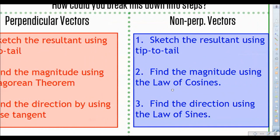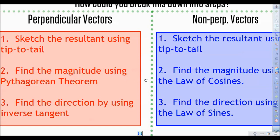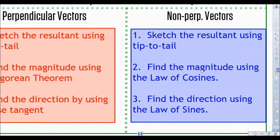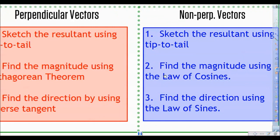What makes this a little bit different from perpendicular vectors is really right at step two. A reminder, step two we used Pythagorean theorem with perpendicular vectors to find the magnitude. Now with non-perpendicular vectors, we have to use the laws of cosines because Pythagorean theorem only works with right triangles. You're never going to be dealing with right triangles when you're dealing with non-perpendicular vectors.